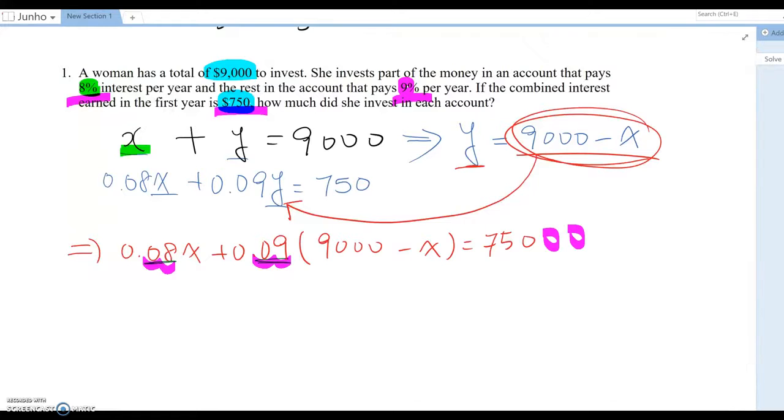Why? Because 750 means 750.00. Now we are moving two more digits, you are also observe two more digits here. So this become 75,000 instead. So now I can rewrite this equation, 8X plus 9, 9,000 minus X equal to 750, I mean 75,000.